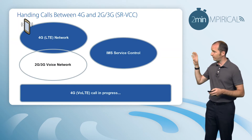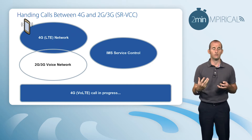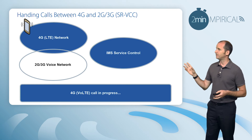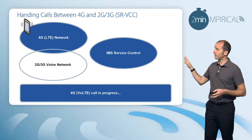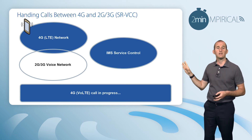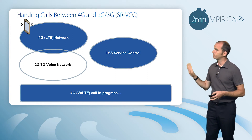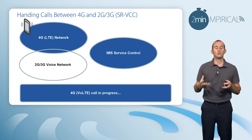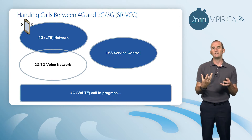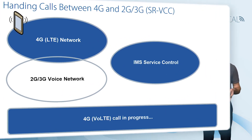We've got a 4G call in progress — it's a VoLTE, a Voice over LTE call, on the 4G LTE network, and the controlling aspect of that is the IMS control network. We also have our 2G and 3G voice network. So we need some controlling entities to coordinate this handover process.